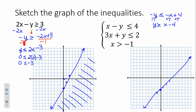Second line: 3x plus y less than or equal to 2. So y will be less than or equal to negative 3x plus 2 — it's a positive y this time, so we don't flip the inequality, we just brought the 3x to the other side. Beginning point, y-intercept, is 2. Slope is negative 3: falling 3, running 1 — very steep slope. Solid line again.